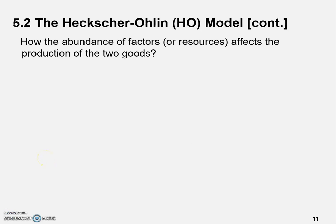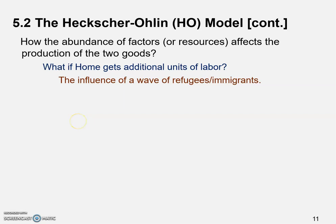Let's summarize what we discussed in the previous video. We're looking at how the abundance of factors or productive resources affects the production of two goods. Specifically, we're saying that home gets additional units of labor — this could be a wave of refugees or immigrants flowing into the country. Because there's an increase in the labor force, which is a very important productive resource, we need to shift the PPF upward.